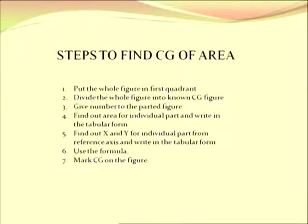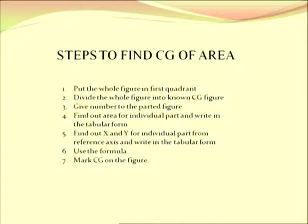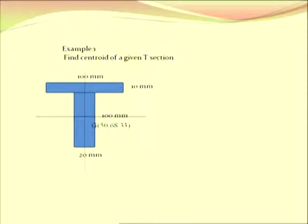After finding the area for each part, step four is to find out the X and Y coordinates for each individual part with reference to the reference axis and write them in tabular form. Step five: use the formula — that is X-bar equals summation of AX divided by summation of A, and similarly for Y-bar. And the last step, step six: mark the CG on the figure. We have to follow these steps for each and every figure whose CG or centroid we want to find.